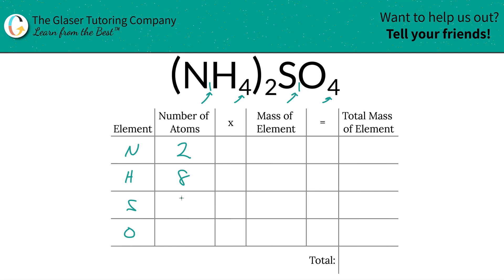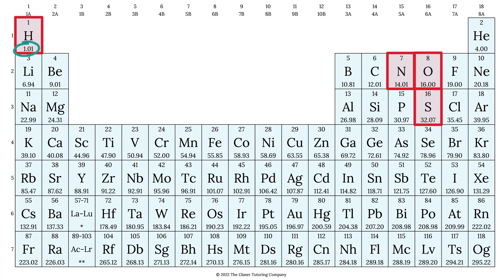Then you're going to take those numbers of atoms and multiply it by the mass of each element. That's where the periodic table comes into play. So let's take a look: hydrogen's mass is 1.01, nitrogen is 14.01, oxygen is 16, and sulfur is 32.07.